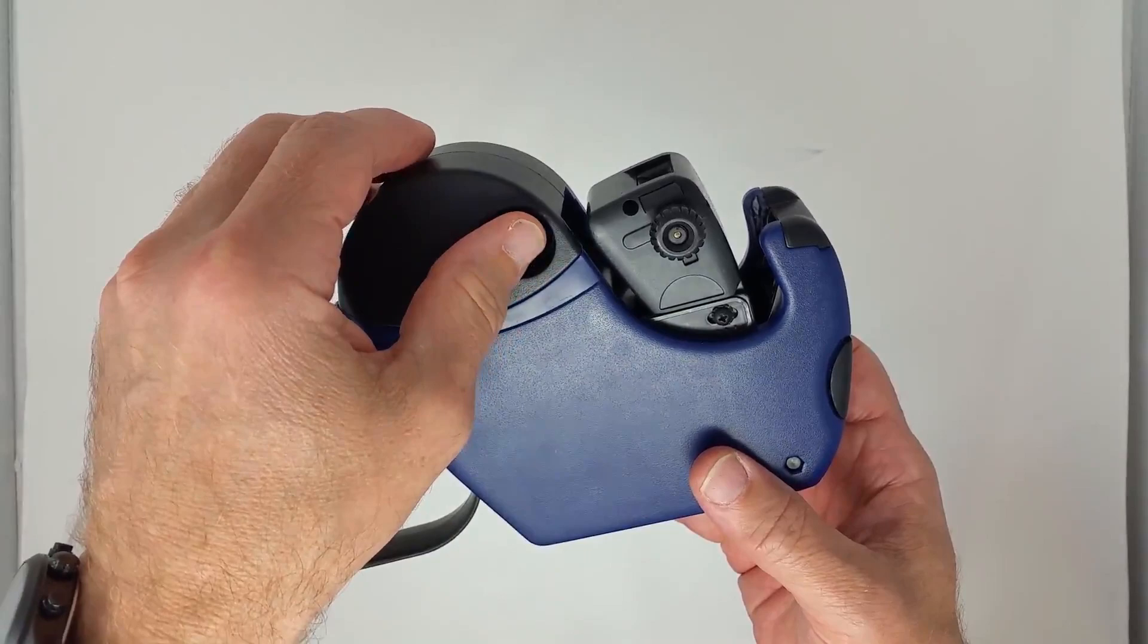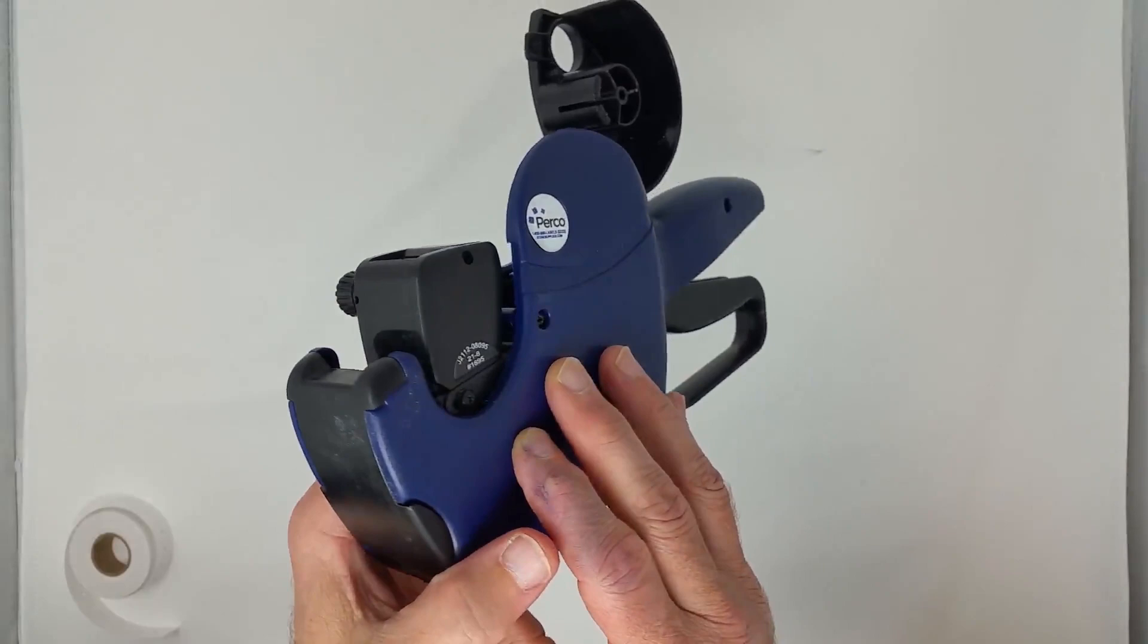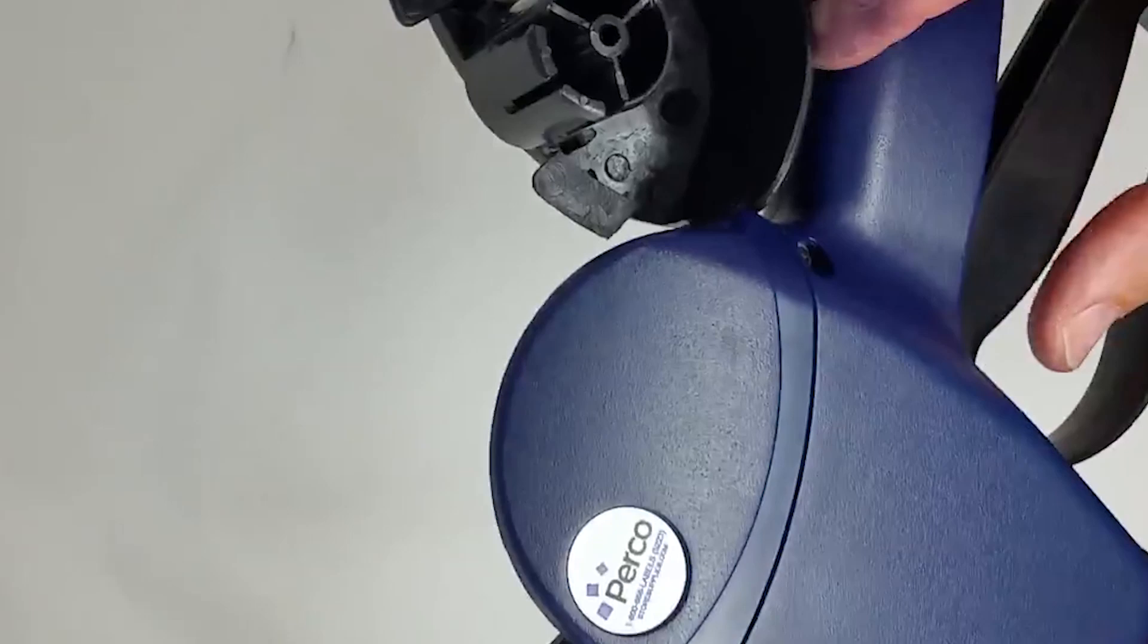Reach into the thumb hole and lift the spindle cover. Turn the gun around and on the other side you'll see the spindle that holds the label roll. Now turn the bottom of the gun upwards and open the outer base plate. You'll see the inner base plate facing the opposite direction.